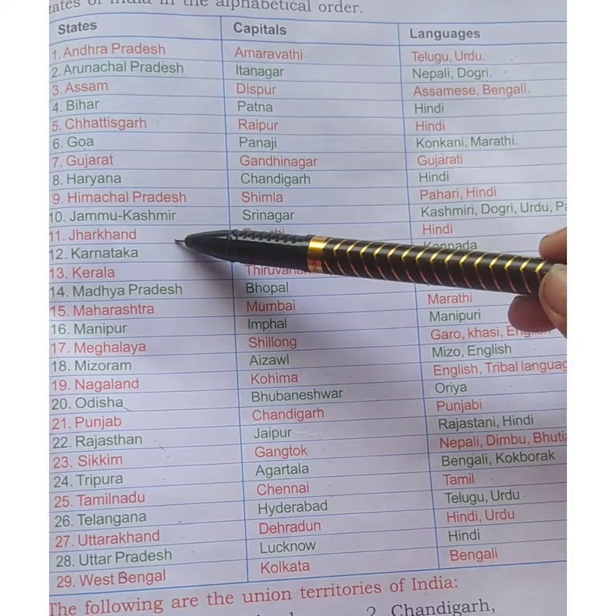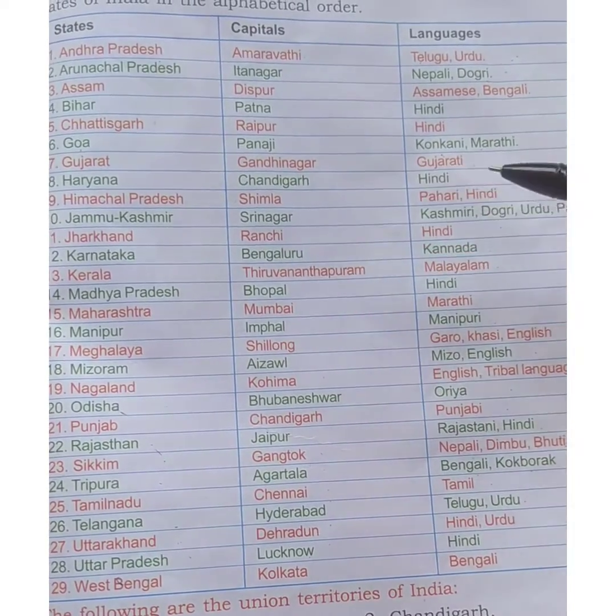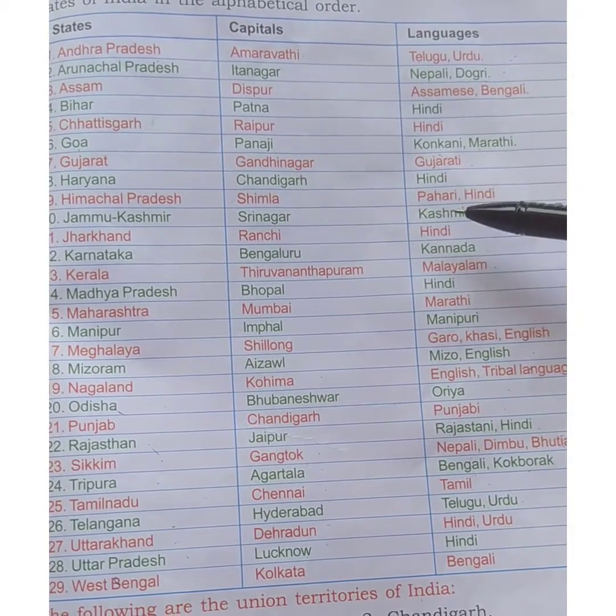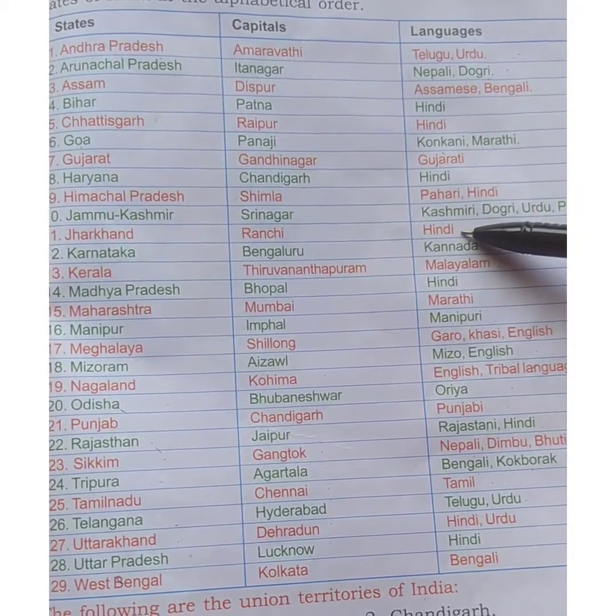Next is Jharkhand. The capital is Ranchi. The language spoken in that state is Hindi.